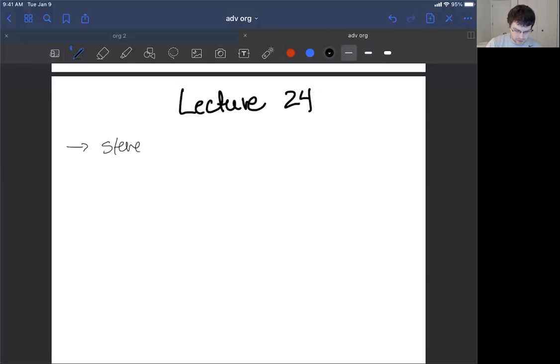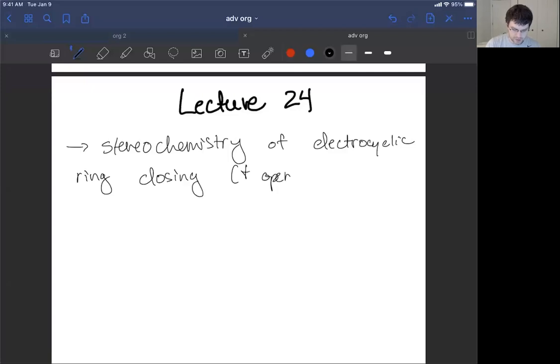Getting into it, stereochemistry of electrocyclic ring closing and opening reactions. In opening reactions, it'll allow us to look at the stereochemistry on the alkene products. We don't do it too often that way, but it'll allow us to determine if we have an E or Z alkene at the end of a ring opening reaction.